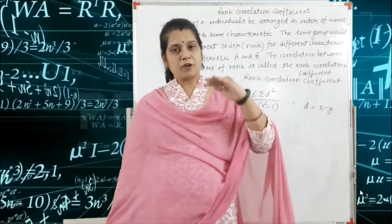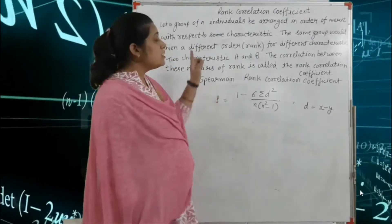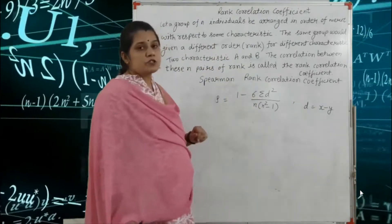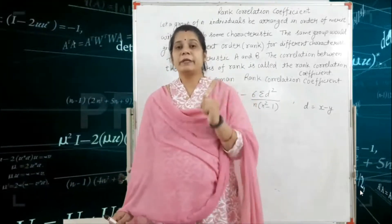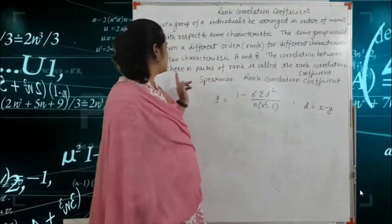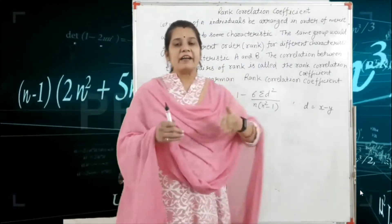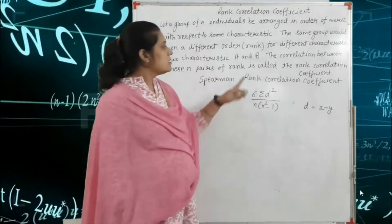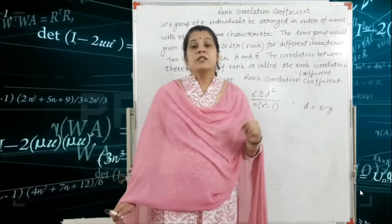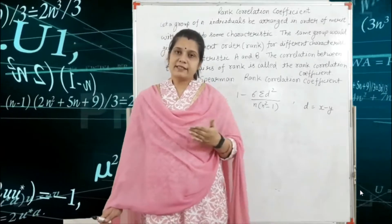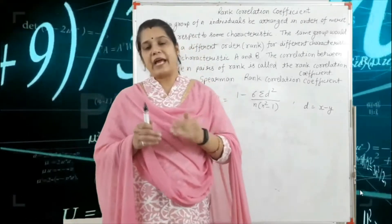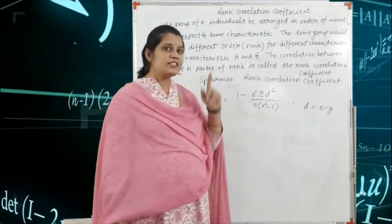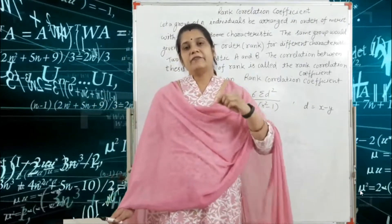That means we have two types of grouping according to rank. The same group would give us a different order or rank for different characteristics. So for example we have two characteristics A and B, and the correlation between these pairs of ranks is called the rank correlation coefficient. This is the Spearman rank correlation and we define rho, while the Carl Pearson correlation coefficient uses small r.